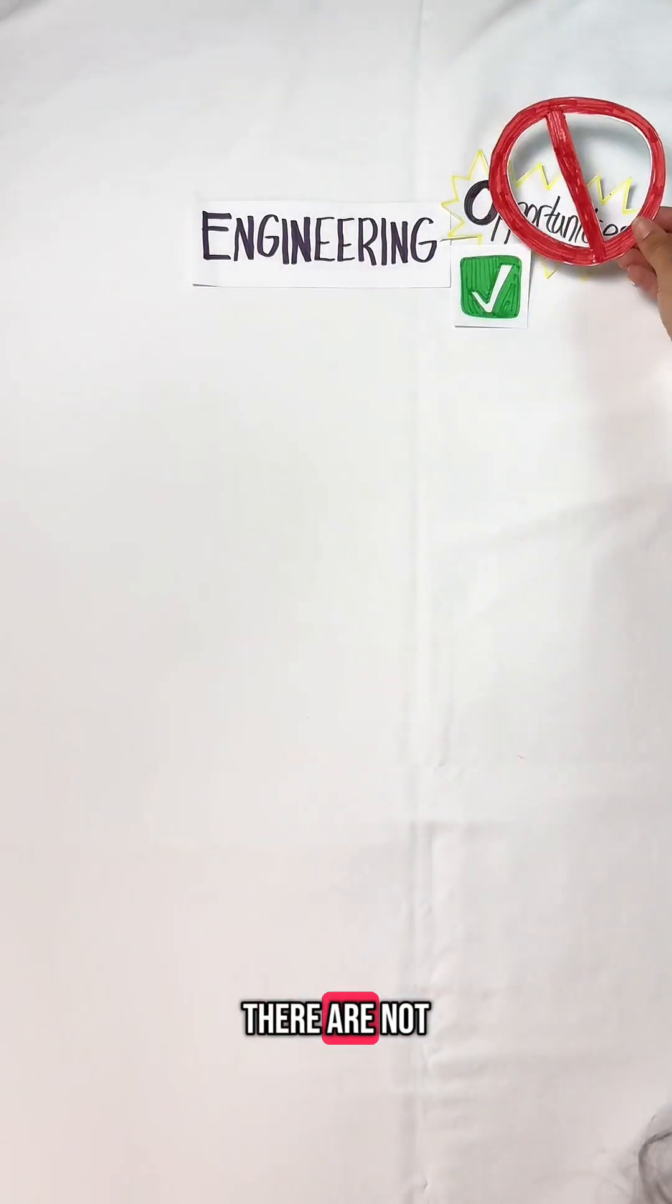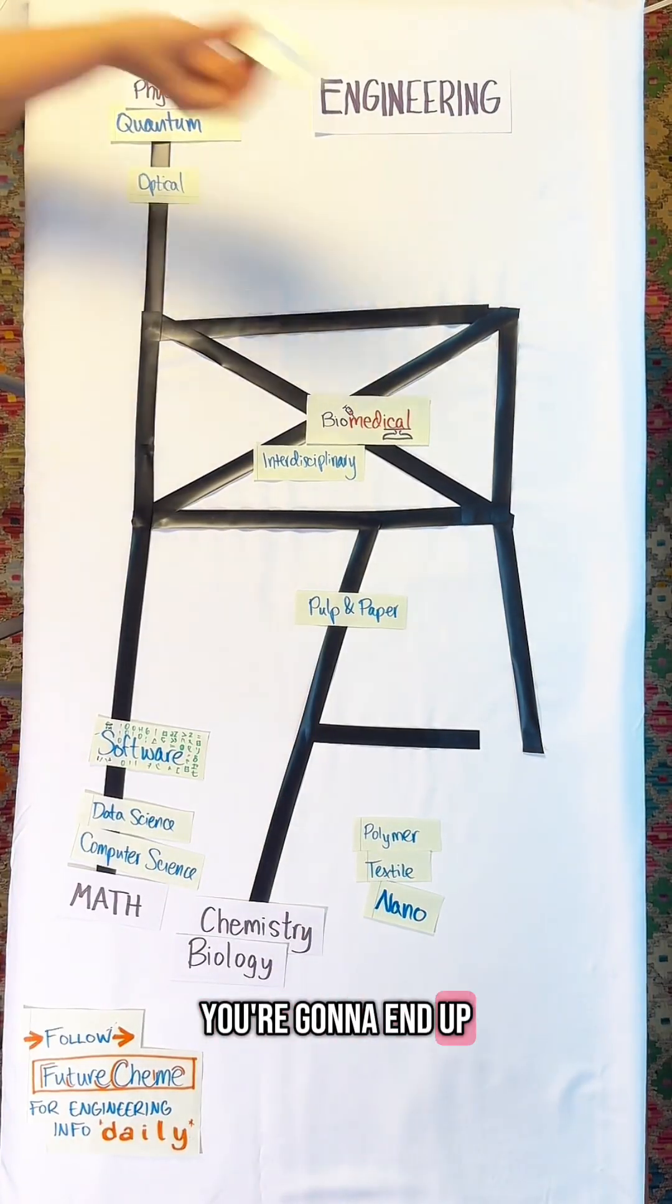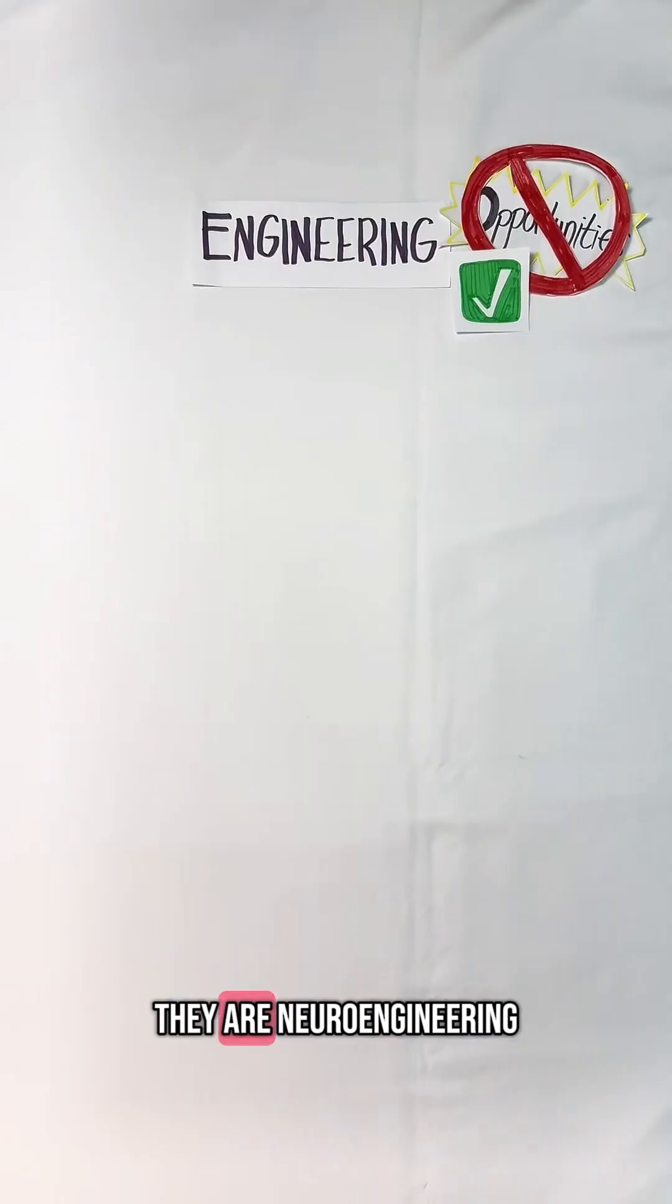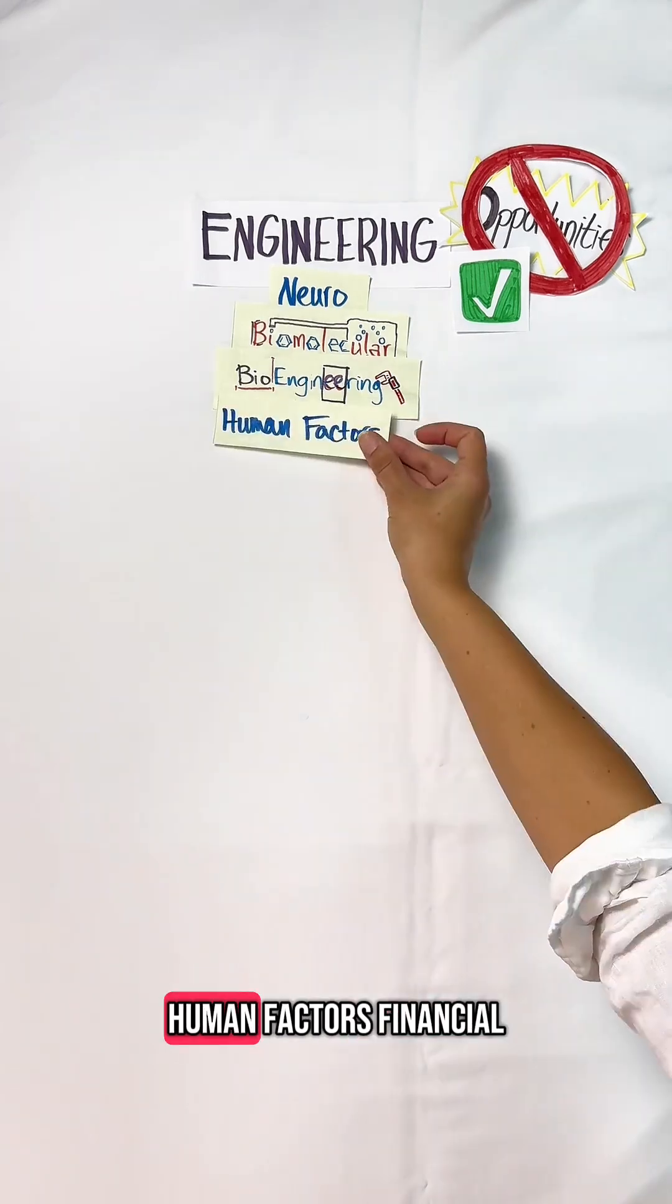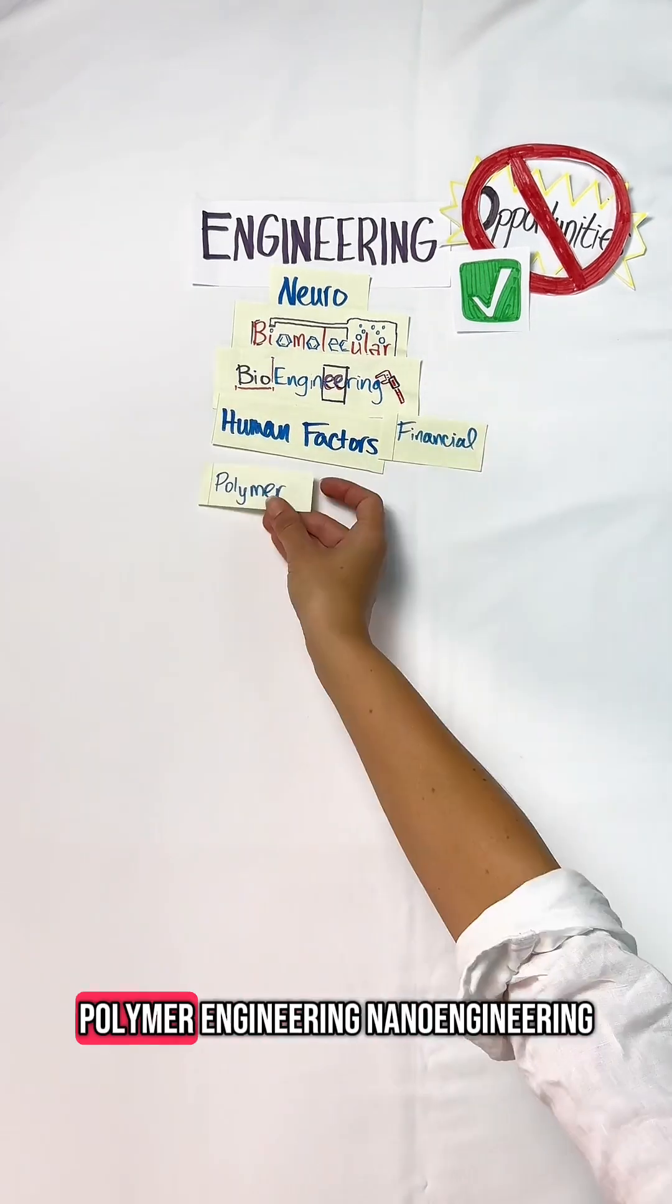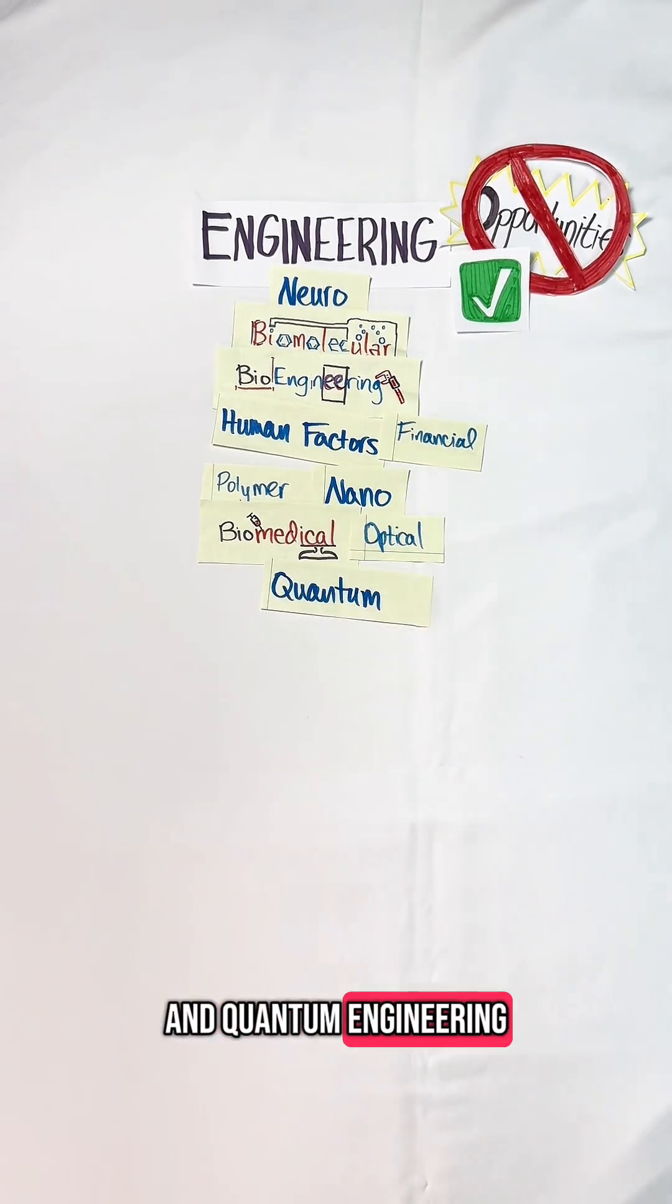The next group I say is fine as long as you are highly committed. The reason being there are not ample opportunities, so you have to know where you're going to end up working before you choose these. They are neuroengineering, biomolecular, bioengineering, human factors, financial engineering, polymer engineering, nanoengineering, biomedical engineering, optical engineering, and quantum engineering.